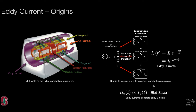According to the Biot-Savart law, these currents running through conducting structures inside the MR system generate eddy B-fields. These B-fields superpose with the designed fields — the gradient fields and the B0 field — and lead to problems with the imaging system.